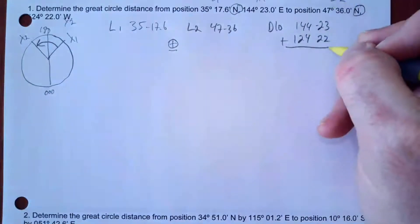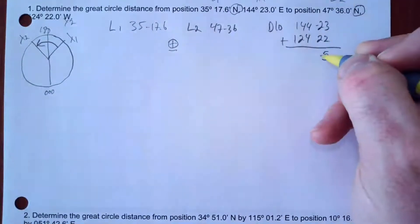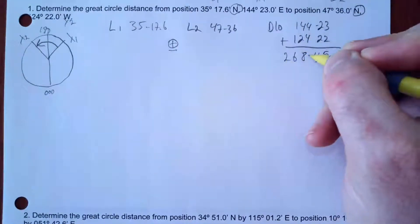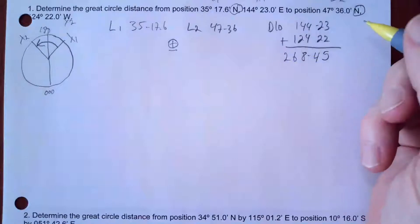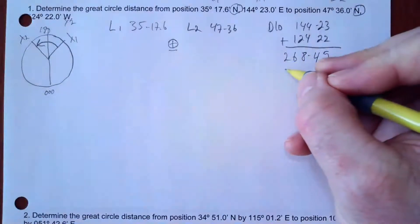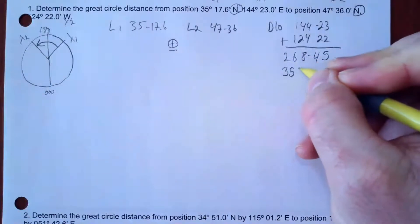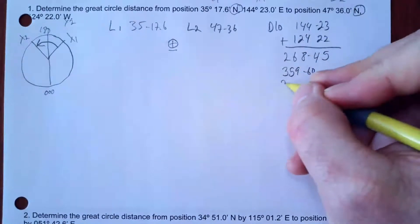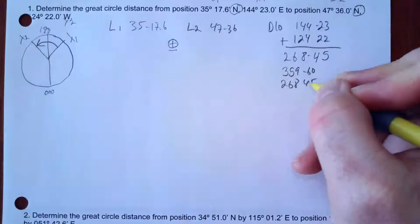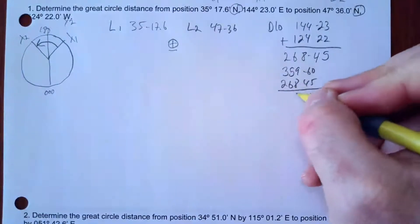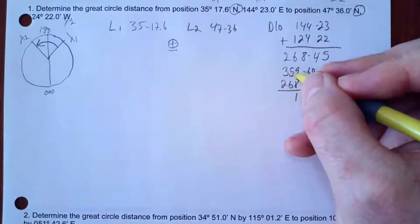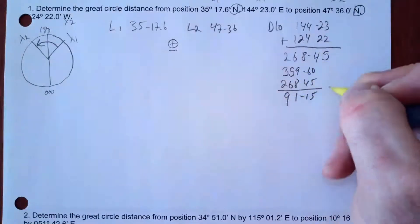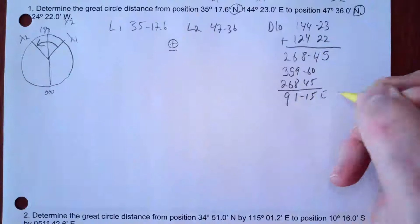So if I add those longitudes: 144° 23' plus 124° 22' equals 268° 45'. Now I'm going to subtract that from 360 — I'll borrow one from 360 to make it 359° 60' minus 268° 45', which gives me 91° 15'. And I went to the East in that case.